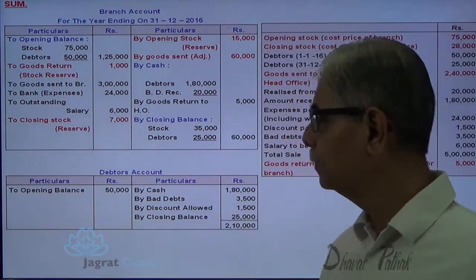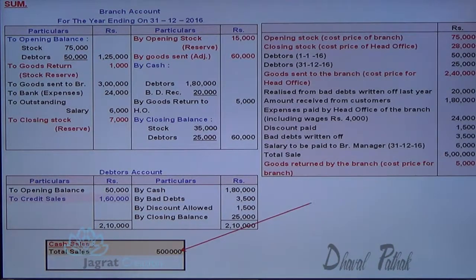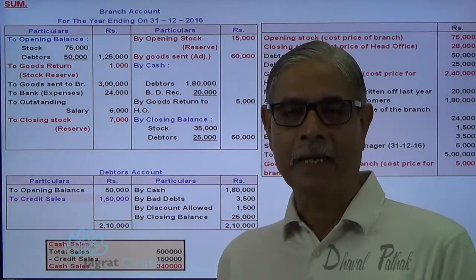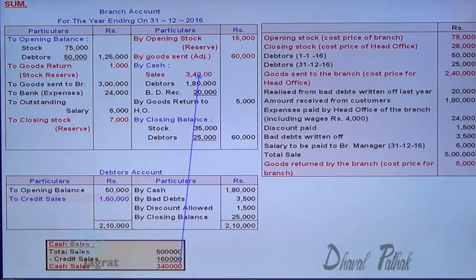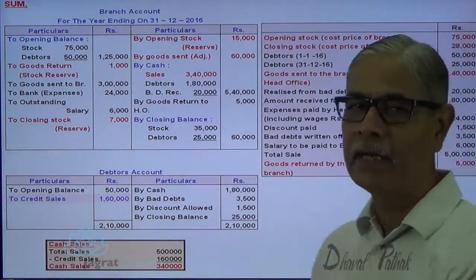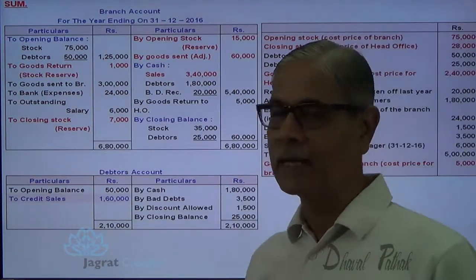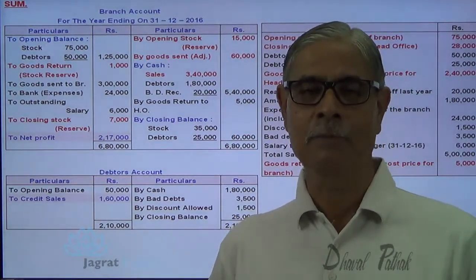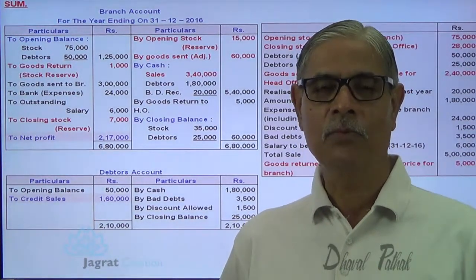Now find the credit sales. This is the credit sales that we have found out. You are given total sales, from which deduct credit sales, so you will get the cash sales. Cash received by the branch at the instance of cash sale is remitted to HO. So cash account debit to branch account credit, 3,40,000. This is how all details are recorded in branch account. Now close branch account and find the profit. 6,80,000 minus all these things, you will get the profit, and that profit is transferred to profit and loss account. Branch account debit 17,000 to profit and loss account credit 17,000. This is how this sum gets solved. Thanks.